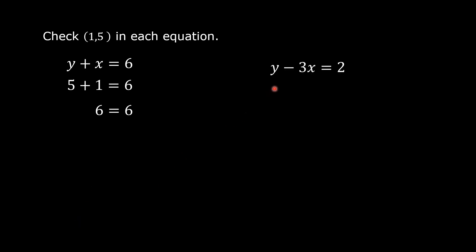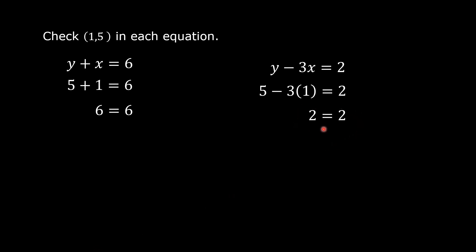The second equation in the given system is y minus 3x is equal to 2. Substitute 1 for x and 5 for y: 5 minus 3 times 1 is equal to 2. Two is equal to 2. This is a true numerical statement. This means the solution of the given system of equations is the point (1, 5).